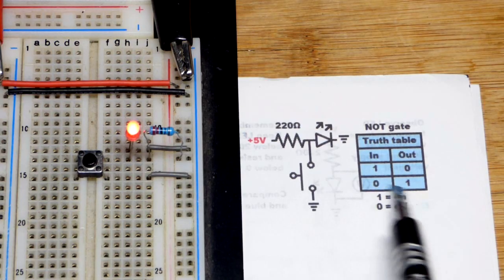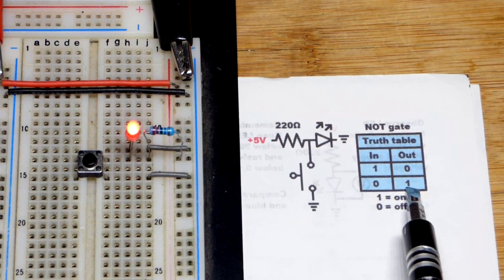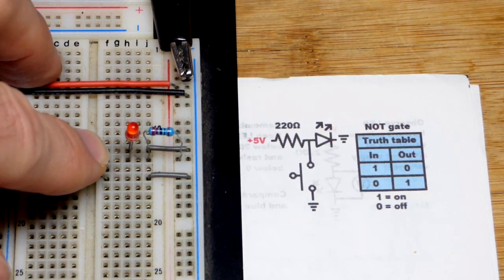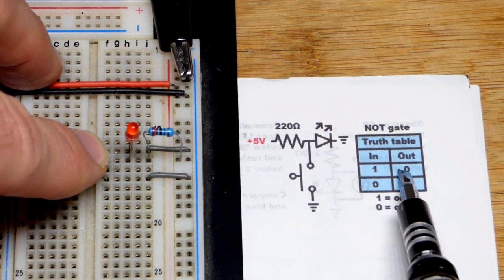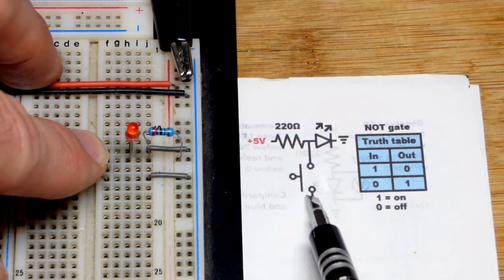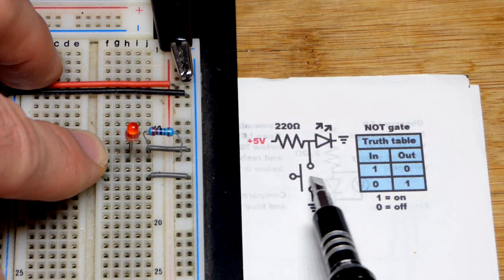The input is actually off, the switch is our input, and the LED is on. Remember, this is just a demonstration circuit, it's not a practical circuit. If I turn the switch on right here on the top, then the LED is off. The output is off, LED is the output.